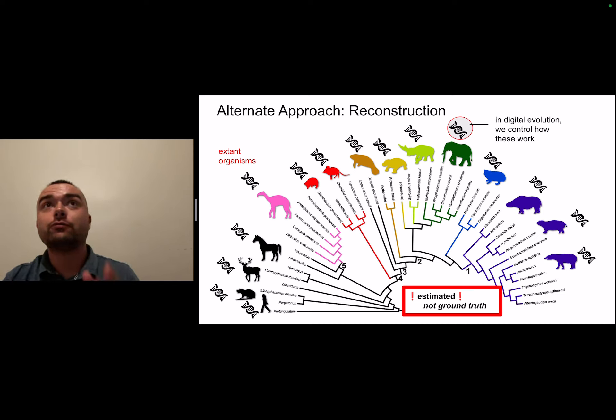The really key core question of our work is the realization that in digital evolution systems we actually control how genomes work and how they're inherited. So how can we design the genomes in our digital evolution system to maximize and facilitate phylogenetic reconstruction from a set of extant digital organisms at the end of a simulation.